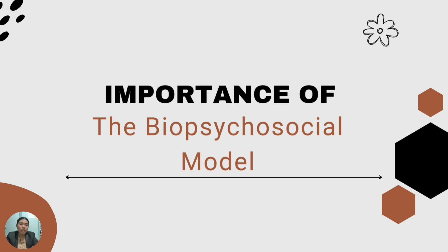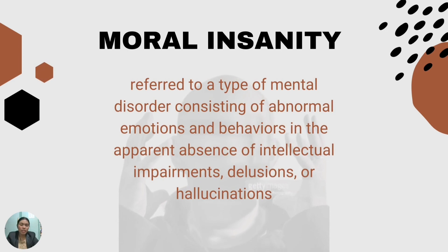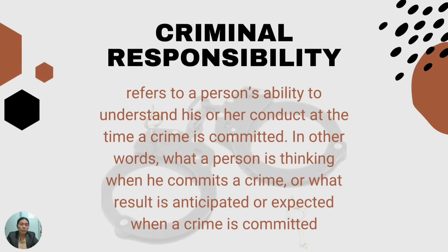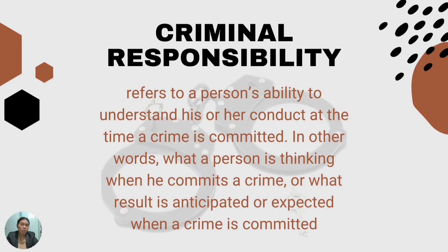Now let's move to moral insanity and criminal responsibility. Moral insanity refers to a type of mental disorder consisting of abnormal emotions and behaviors in the apparent absence of intellectual impairments, delusions, or hallucinations. It refers to the psychological state of a person when he or she committed a crime — this is between being aware or not. Criminal responsibility refers to a person's ability to understand his or her conduct at the time a crime is committed — in other words, what a person is thinking when committing a crime or what result is anticipated. Simply put, it is the criminal being held responsible for his or her action and being punished for it.